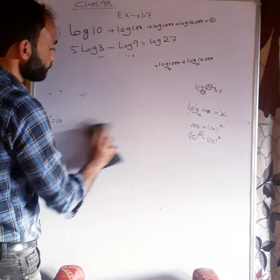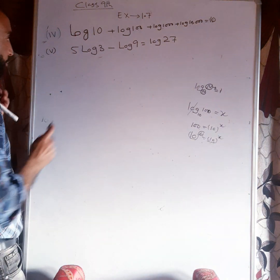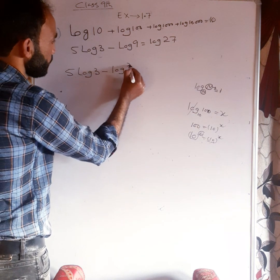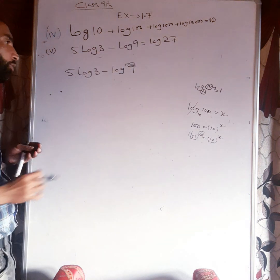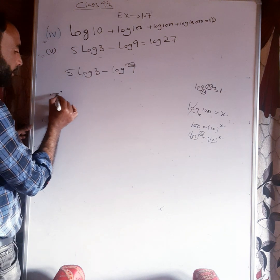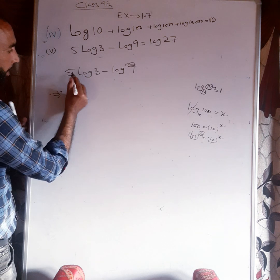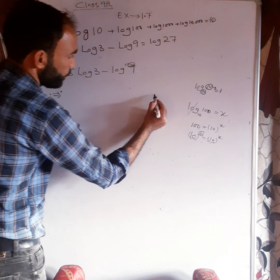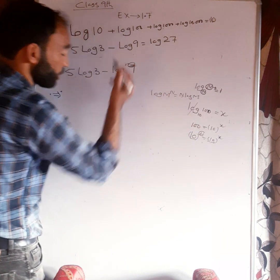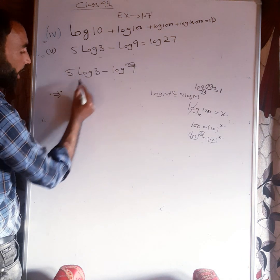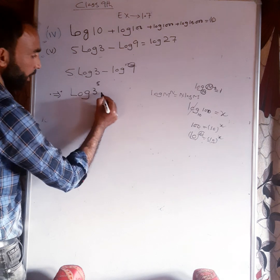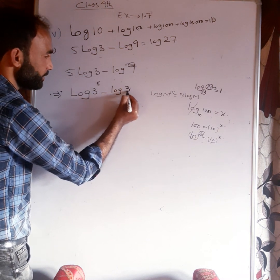Now part number five — we have to prove that five log three minus log nine is equal to log twenty-seven. Using the property: n log m equals log m raised to power n, so five log three becomes log three raised to power five, and log nine becomes log three raised to power two. So we have log three to the power five minus log three squared.